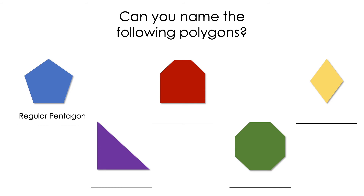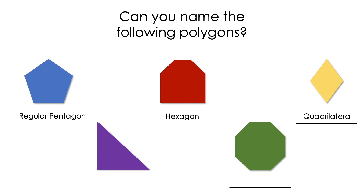Let's go with the second one, the red one. That one has six sides. However, not all the sides and the angles are congruent, so that one is just a hexagon. The one on the right side looks like a rhombus — yes, that means all the sides are congruent, but the angles are not congruent. So that means it's just a quadrilateral.